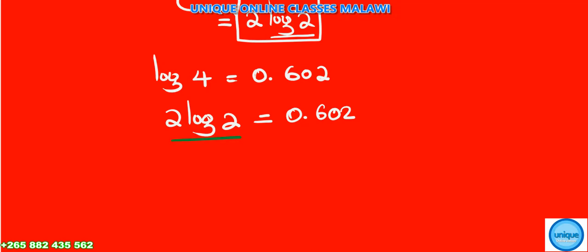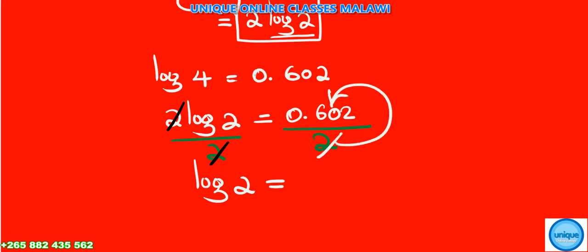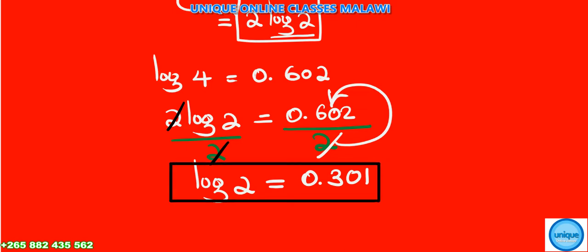Log of 2 is equal to 0.602 divided by 2. We cancel the two on both sides. So log of 2 equals 0.301. That's the answer for part (a).